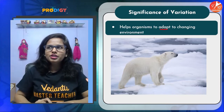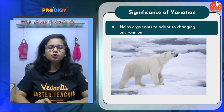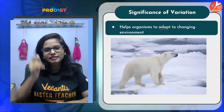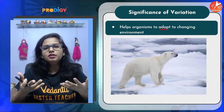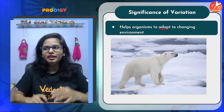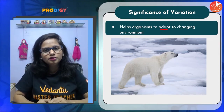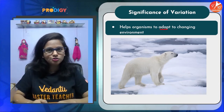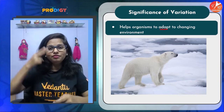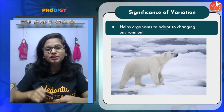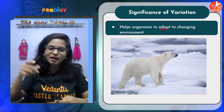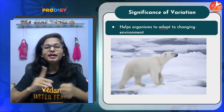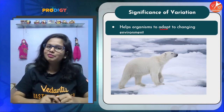Second, variations also help in bringing adaptation — they help an individual to adapt to changing environmental conditions. For example, the polar bear has a thick layer of fat called blubber underneath its skin which helps trap heat inside its body and survive in cold climatic conditions. Its fur coat is white so it can camouflage in cold environments. Camels have thick and long eyelashes to prevent sand particles from entering their eyes and a hump to store water.